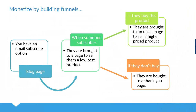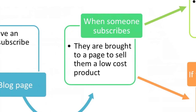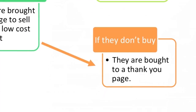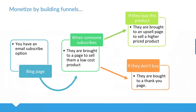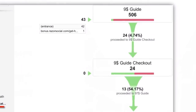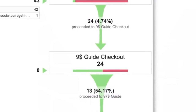Finally, we're on to M for monetization. Once we build the subscribers, we can consider how we monetize and turn that into dollars. We monetize by building funnels. For example, you have an email subscribe option on the left — when someone subscribes they're brought to a page to sell maybe a low cost product, then brought to a page to sell a higher priced product, or if they don't buy, they're brought to a thank you page. If you set up goals in Google Analytics, you can go to the funnel visualization section and see people stepping through your funnel — you'll see 506 started at this stage, 24 at the next, 13 at the next.